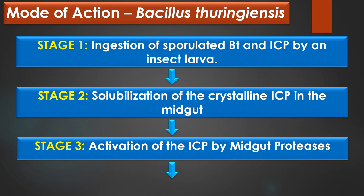In the second stage, solubilization of the crystalline ICP in the midgut takes place. The ICP is highly insoluble in normal conditions, so it is entirely safe to humans, higher animals and most insects. It is solubilized in reducing conditions of high pH, that is pH 9.5, the condition commonly found in the midgut of the Lepidopteran larvae. On getting solubilized in the midgut, the crystalline bodies release the protein called as delta-endotoxins. For this reason, Bacillus thuringiensis is a highly specific insecticidal agent.